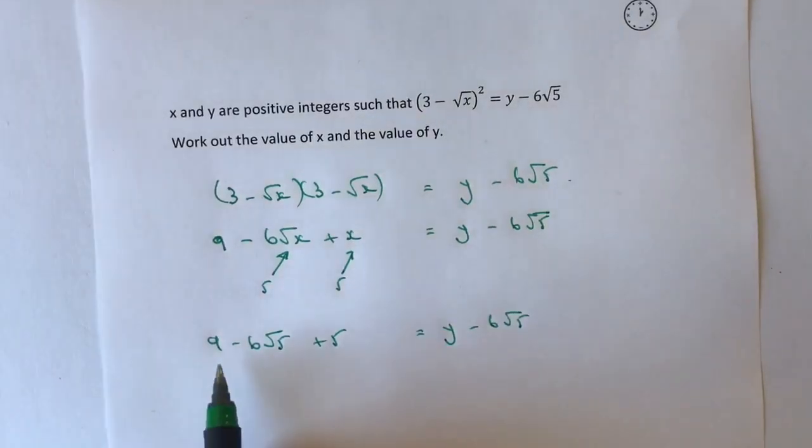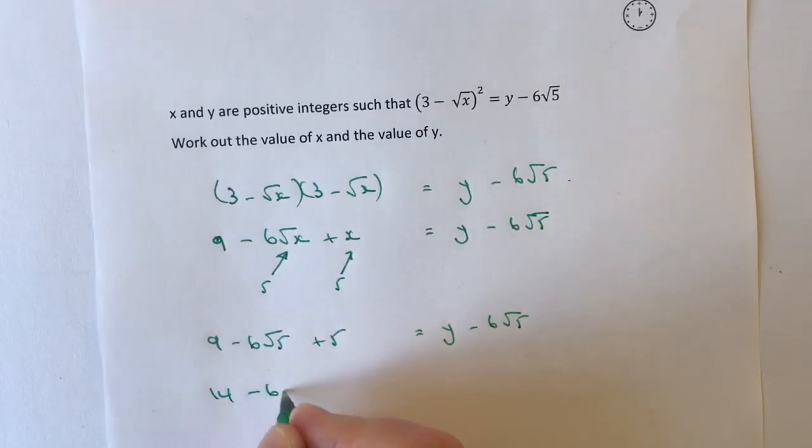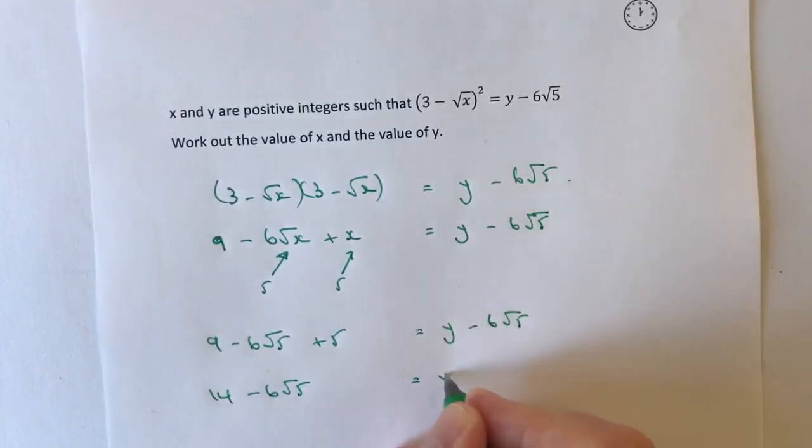So 9 + 5 is going to be 14. So it's actually 14 - 6√5 = y - 6√5.